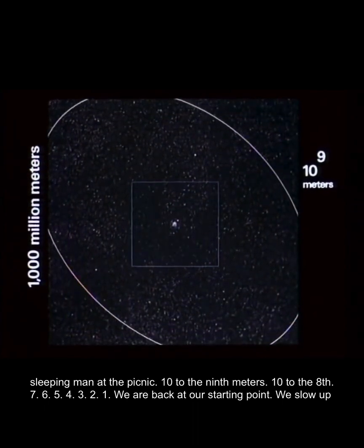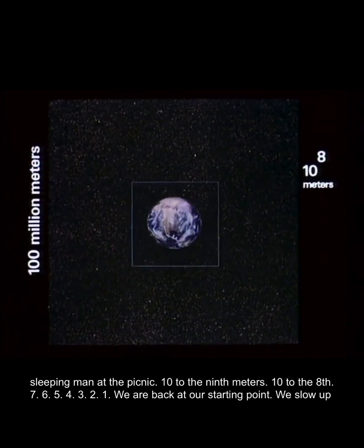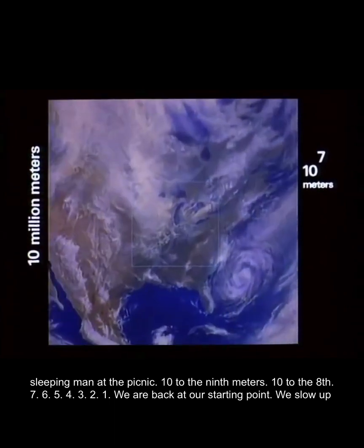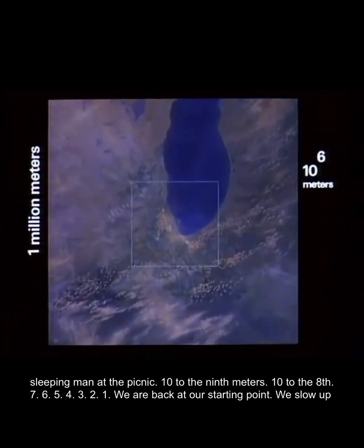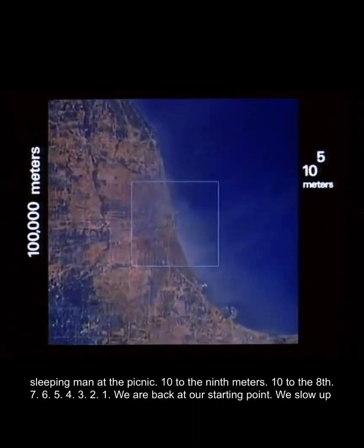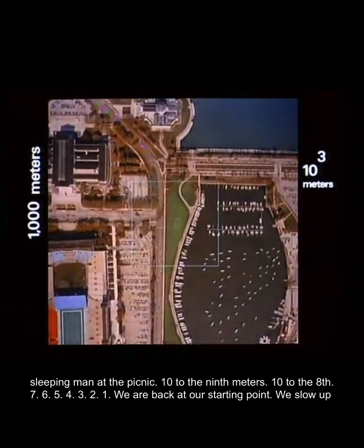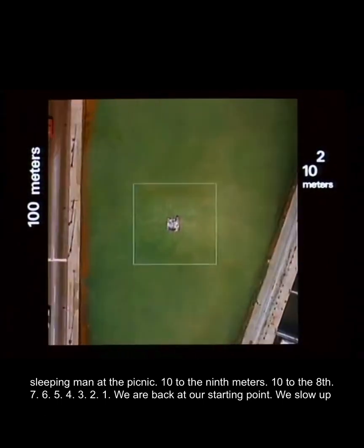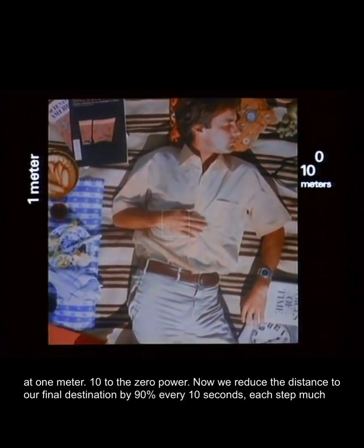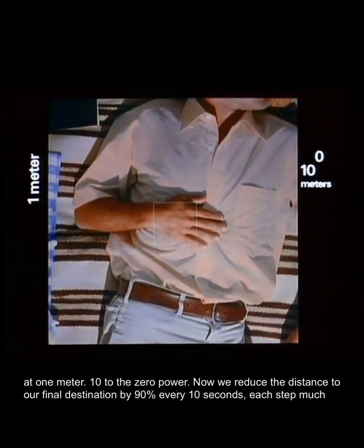10 to the 9th meters, 10 to the 8th, 7, 6, 5, 4, 3, 2, 1. We are back at our starting point. We slow up at one meter, 10 to the zero power.